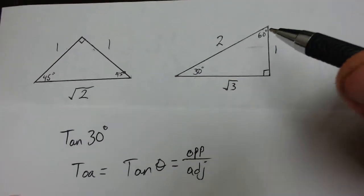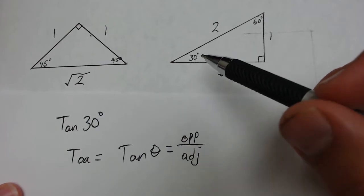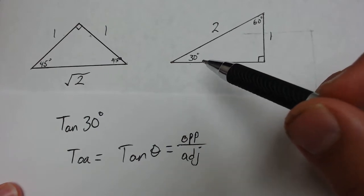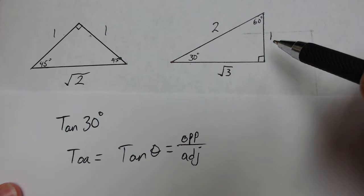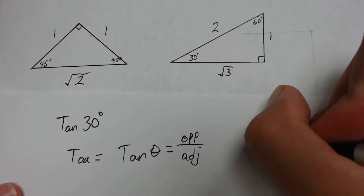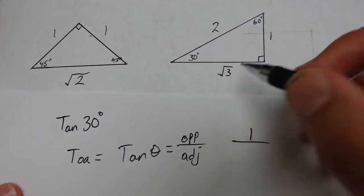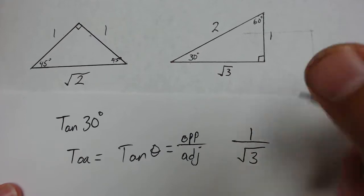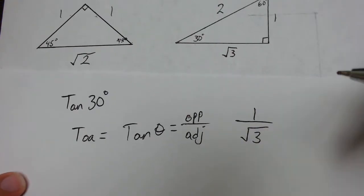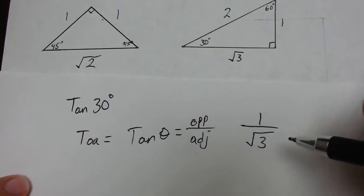So now I look at my reference triangle that I just drew from memory, and I look at the angle of 30 degrees. The opposite side of 30 degrees is 1, so I'm going to fill that in here. The adjacent side of 30 degrees is going to be the square root of 3.